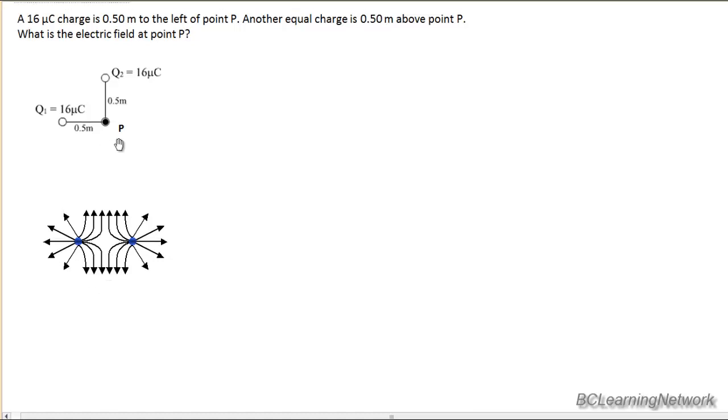So we're going to label our vectors. Our vector for the electric field from Q1 will be in red, and our vector for the electric field from Q2 will be in blue. And we'll sketch those now and explain.